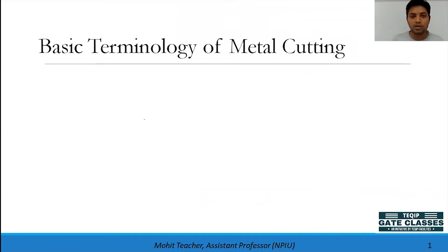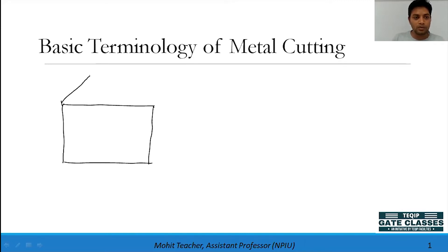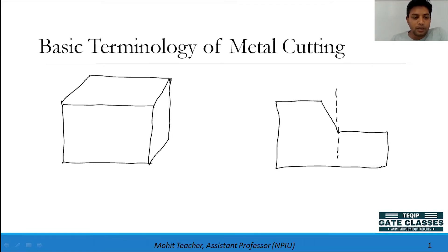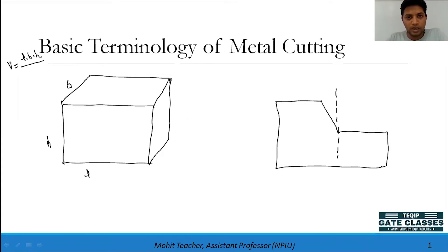To understand the basic terminology of metal cutting, I am using two figures. The first is a simple figure of a body that is about to be machined, using simple cutting. In the initial body, you have a metallic body with dimensions: width B, height H, and length L. So the volume is L×B×H. Now what we are doing is removing material — we have to do metal cutting.